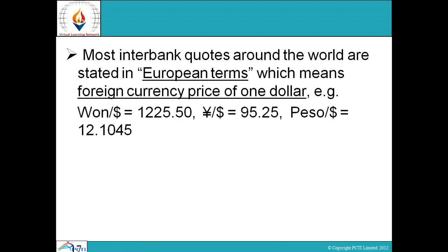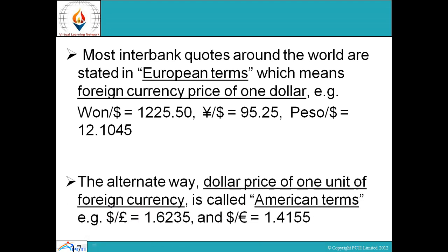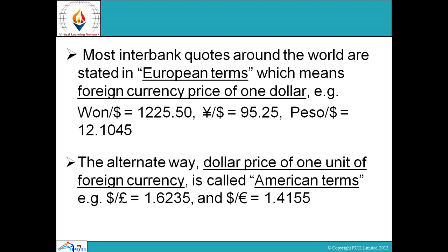Most interbank quotes around the world are stated in European terms, which means the foreign currency price of one dollar — for example, yen per dollar equals 95.25, peso per dollar equals 12.1045. The alternate way — the dollar price of one unit of foreign currency — is called American terms: for example, dollar per yen, dollar per pound equals 1.6235, and dollar per euro equals 1.4155.